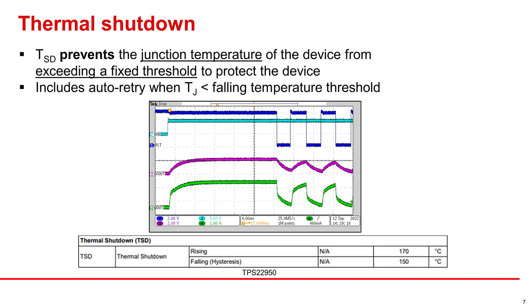Thermal shutdown protects the load switch junction temperature from reaching levels that could damage it. It has auto retry once the junction temperature falls below the falling threshold, as you can see in the table pulled from the TPS22950 for thermal shutdown. You can also see this in the scope shot of the oscillations that occur when a device enters thermal shutdown while having an auto retry feature.